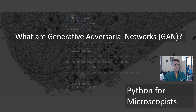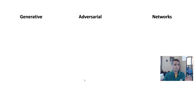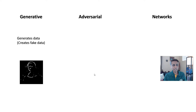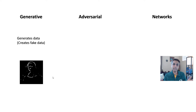Let me start by talking about the terminology. We call it generative adversarial networks, so let's explain the terms one by one. Generative — as the name suggests, it generates data, which means it's actually creating fake data. Here there is a fake data of an outline of Mona Lisa. If I trained it for a lot more epochs, I could actually generate something that looked like a real Mona Lisa picture. But the whole point of generative is it generates data.